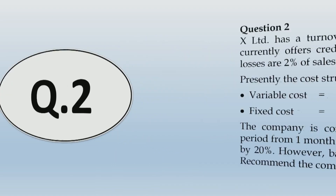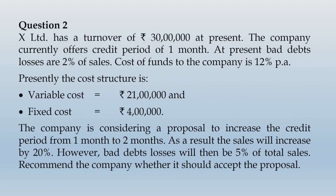Let us move ahead and take up question number two. X Limited has a turnover of rupees 30 lakhs at present. The company currently offers a credit period of one month. Bad debt losses are 2 percent of sales, and cost of funds to the company is 12 percent per annum. The cost structure is variable cost equals rupees 21 lakhs and fixed cost equals rupees 4 lakhs. The company is considering a proposal to increase the credit period from one month to two months, as a result sales will increase by 20 percent. However, bad debt losses will then be 5 percent of total sales. We need to recommend whether the company should accept the proposal.